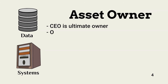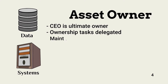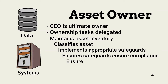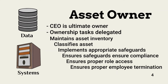An organization's CEO is the ultimate asset owner. However, information asset tasks are usually delegated to department heads. For example, the VP of Finance would be the financial systems and data owner. Employee data and related management systems would be owned by the VP of HR. The owner delegates are responsible for maintaining an asset inventory, classifying and categorizing systems and data, implementing reasonable and appropriate safeguards that both manage risk and ensure compliance, ensuring proper access for business roles, and ensuring the disabling of access after employee termination.